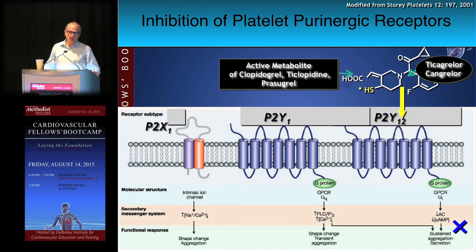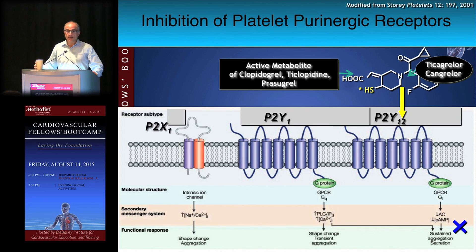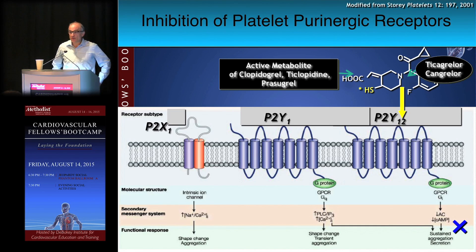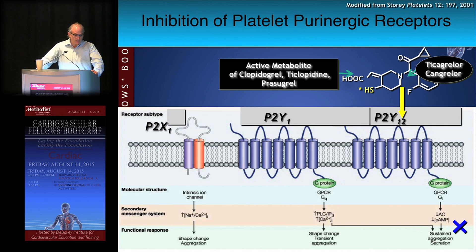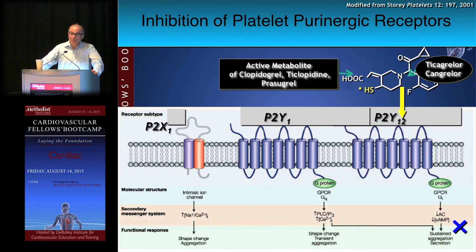The ADP receptor — which we used to talk about until people learned that human platelets have three ADP receptors: P2X1, which you probably won't ever hear about; P2Y1, for which investigations are underway to develop antagonists; and P2Y12. Last time I looked, there were 14 different P2Y receptors in the human body. If you stimulate P2Y12, you trigger a G-protein-coupled pathway that acts in synergy with other platelet activation pathways and leads to platelet activation, shape change, and secretion, and downstream leads to sustained platelet aggregation.